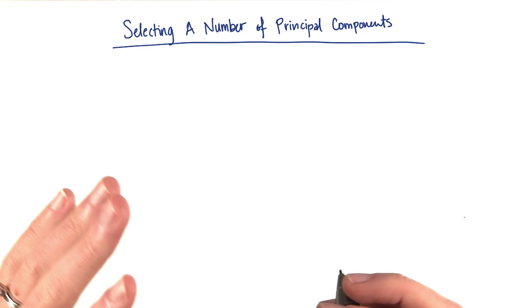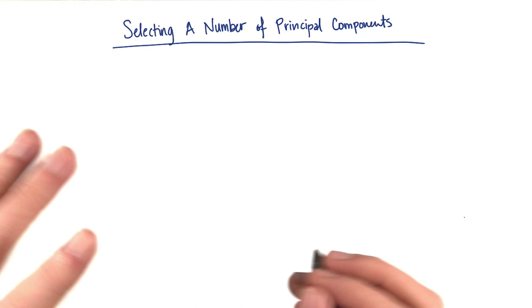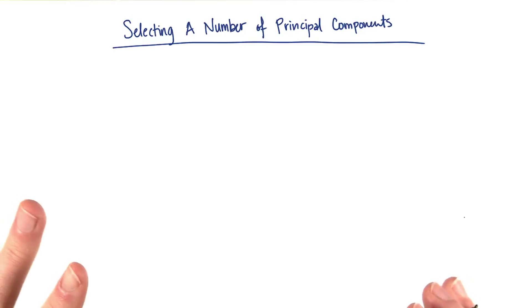It's a little bit tough to answer that because there's no cut and dry answer for how many principal components you should use. You kind of have to figure it out. Which of these options do you think sounds like a good way to figure out how many principal components you should be using?